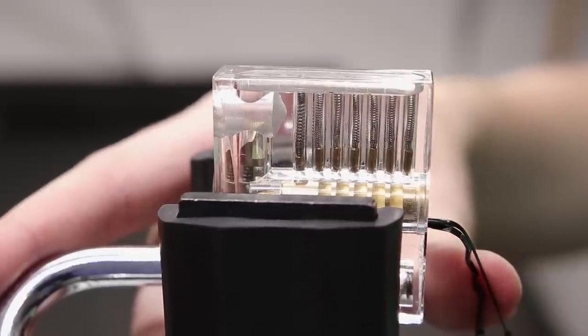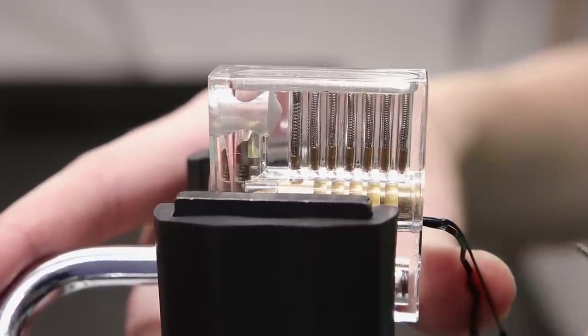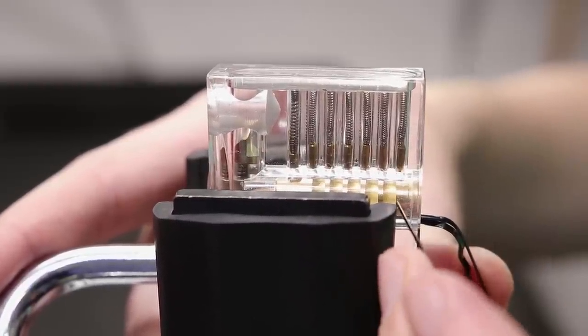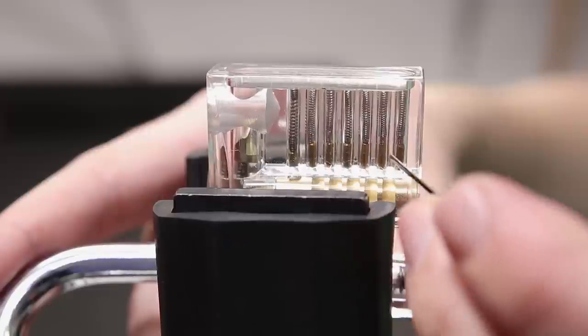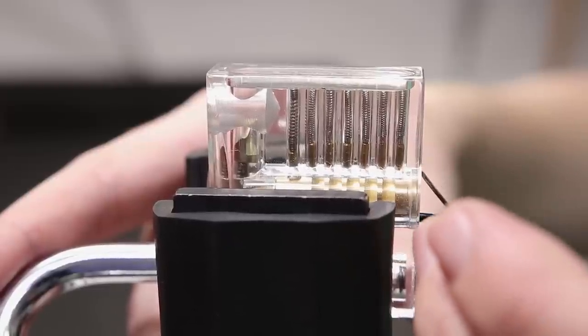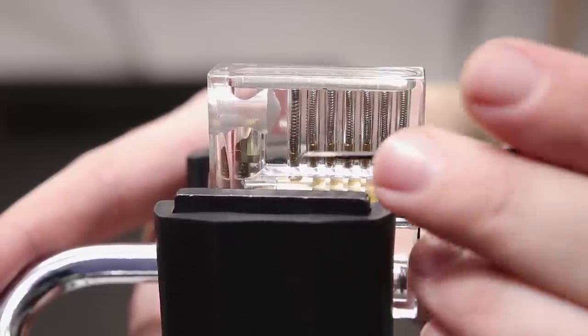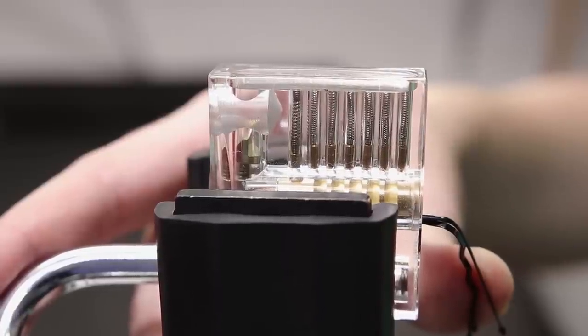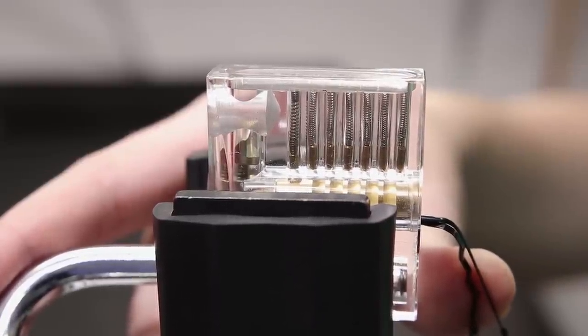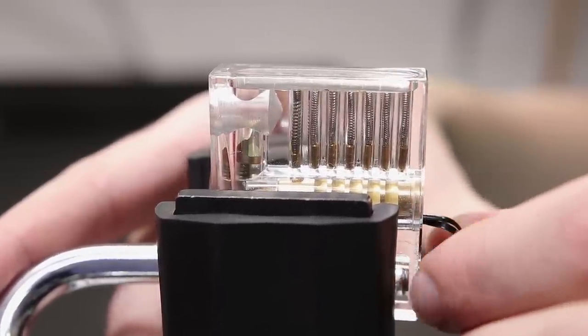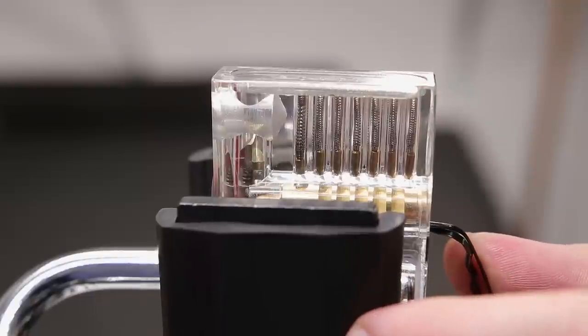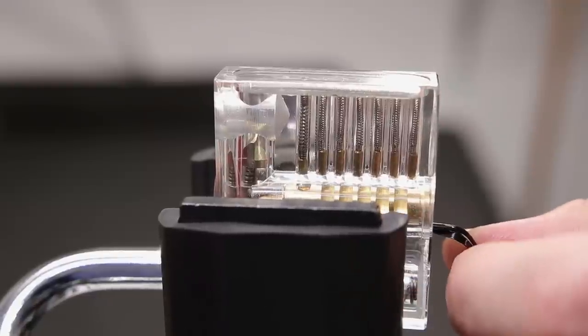So when you have set the lock and you've been able to pick it, what has happened is you have set all the driver pins up above the plug here, all the key pins have dropped back down, and now nothing is blocking the plug rotation and the lock opens right up. So what I'd like to do now is just go over a little bit more in depth the process of picking open a lock.